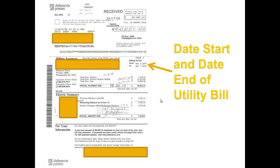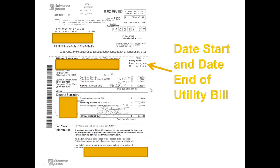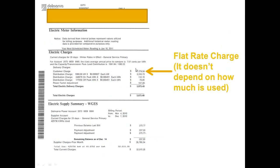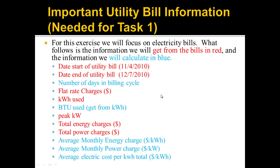The first thing we're going to look for is the date start and the date end of the utility bill. You can see in page 1 of this utility bill — I've made some changes so we can't see whose utility bill this is — there's usually a from and to date. That's from November 4th to December 7th. So that's the date start and date end. Let's go ahead and update our table with that.